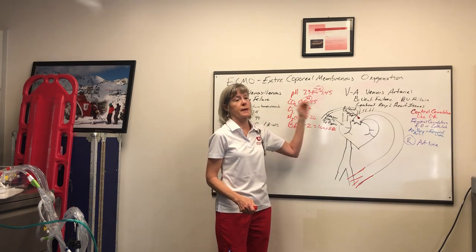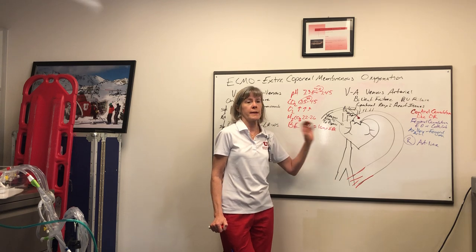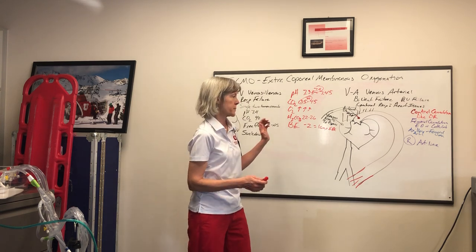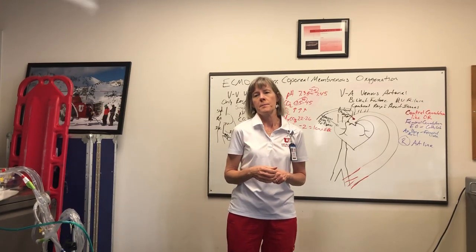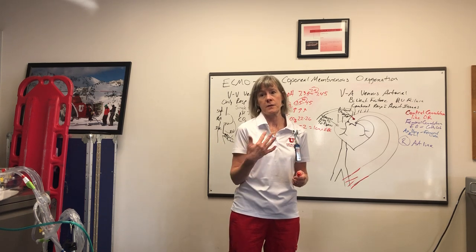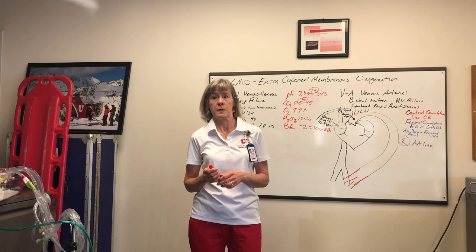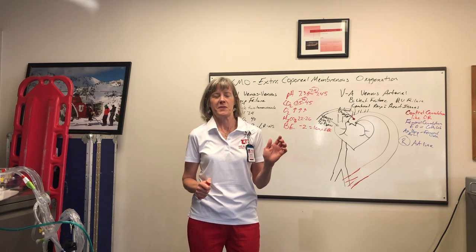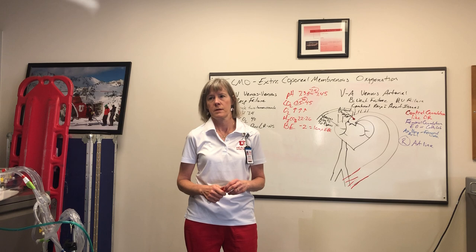Bicarb normal is 22 to 26. We base our bicarb on base excess - for every negative 2 of base excess, we give 1 amp of bicarb. For example, if a patient's pH is 7.25, bicarb is 12, and base excess is negative 16, we could give up to 8 amps of bicarb. We give it as a push - not a drip - because if they're hypoperfused, bicarb has to convert in the liver. Giving a whole 50 mEq amp fast gets to the liver faster and will convert. A drip takes too long when hypoperfused. We also need the myocardium to contract - even just a little - and the myocardium cannot be asystolic because the blood will clot.